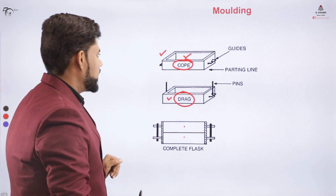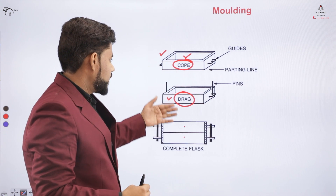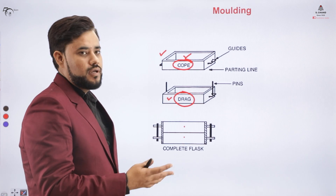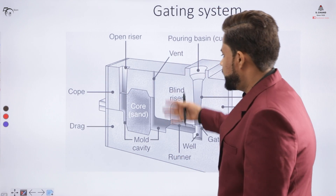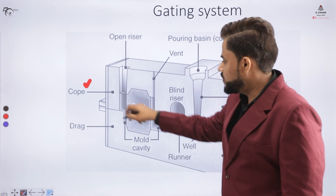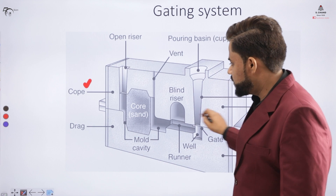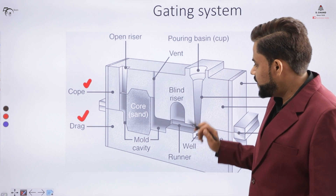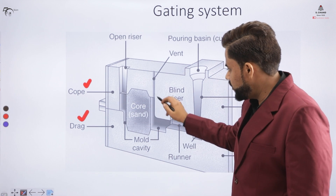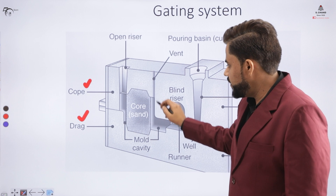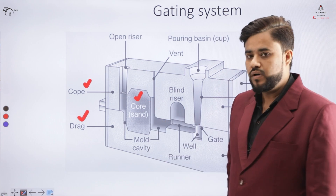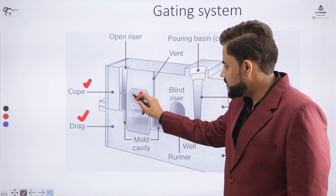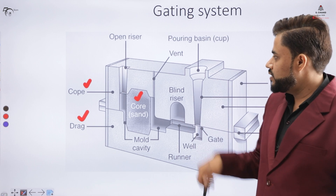To have a clearer picture, let us look at a cut-sectional view of the flask. The upper part is the cope and the lower part is the drag, and we have sand inside both. A mold cavity is created, and inside that mold cavity we have placed a core, which is also made of sand. Inside the cavity there is a core placed. Now we want to pour in the material — so how can we do that?